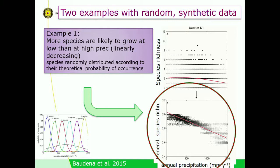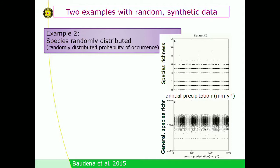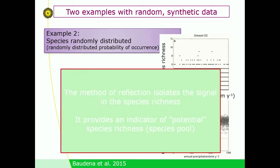The method picks up the signal in what you could call the species pool — where the species got generated from. And this is not a spurious pattern: if you create a dataset without a trend, you don't get any fake trend either. The method isolates the signal behind species richness and provides an indicator of potential species richness.